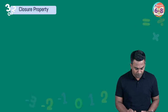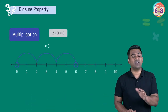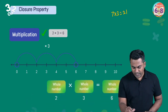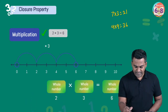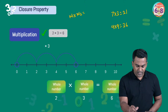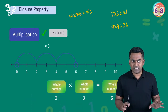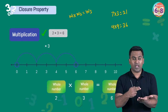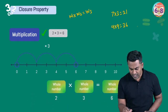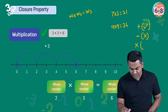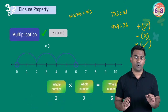Moving on to multiplication. You can pick any two whole numbers and the result is always a whole number. Seven multiplied by three equals 21; four multiplied by nine equals 36. So when one whole number is multiplied with another, the result is always a whole number, and multiplication follows the closure property.